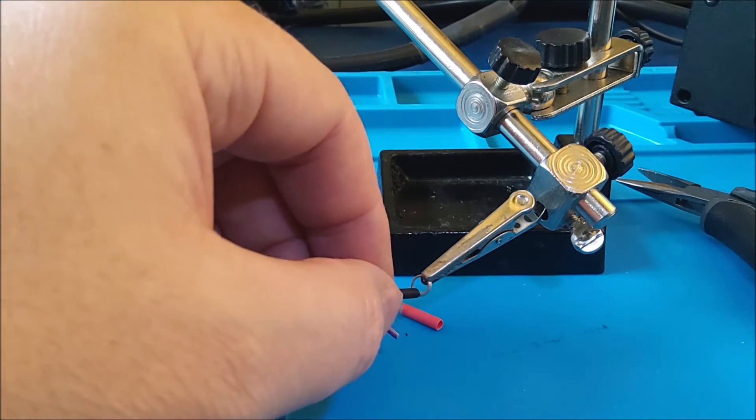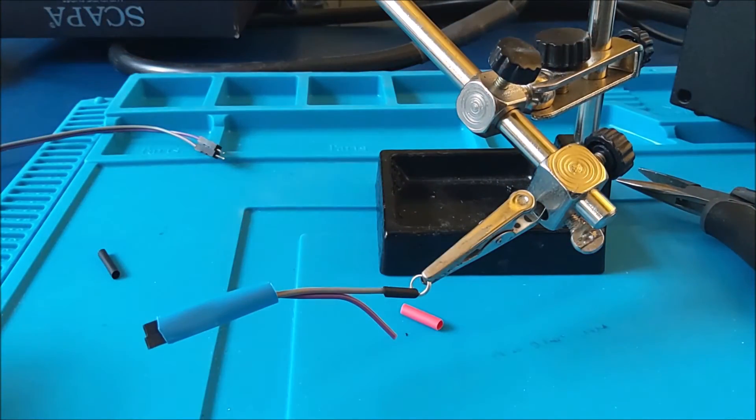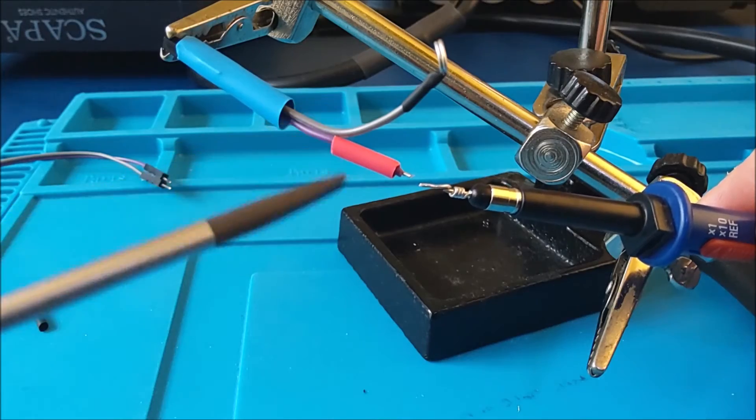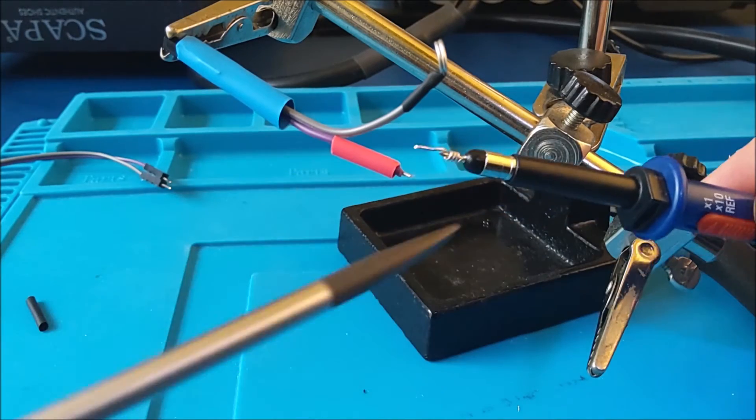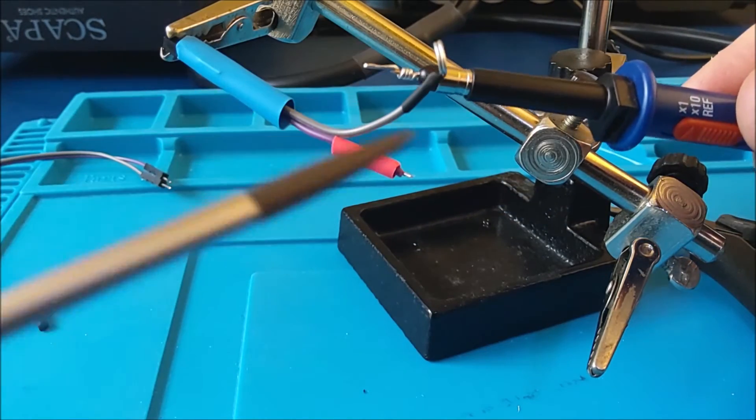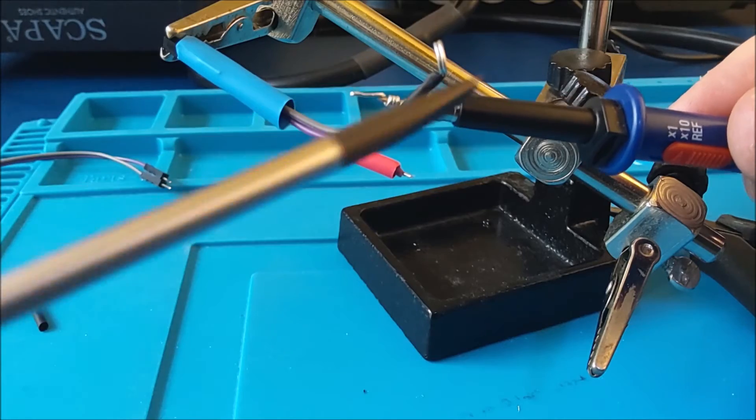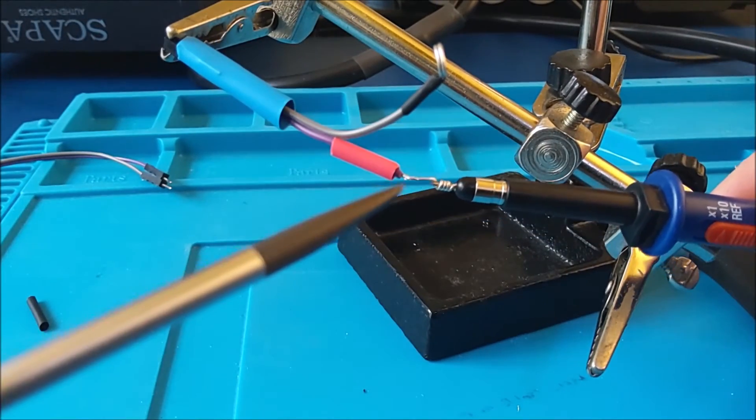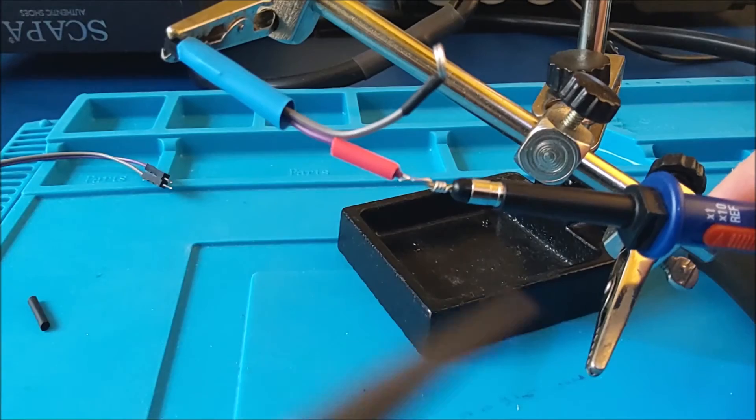The two wires are together, so now I'll move the heat shrink over and heat it up. I've put heat shrink on the other part, cut it to size so it fits where the ground would fit on the probe, then checked how much of the pin has to overlap with the positive probe point.